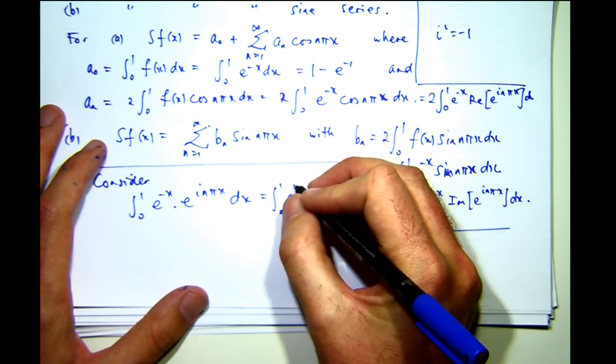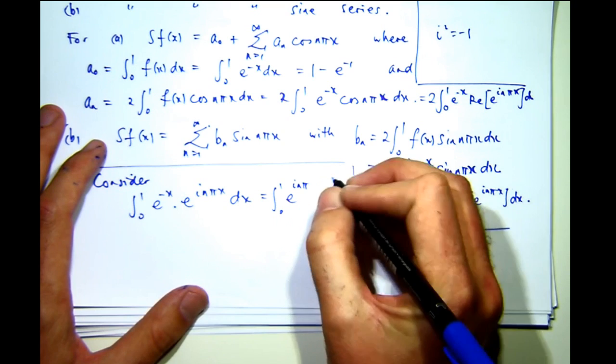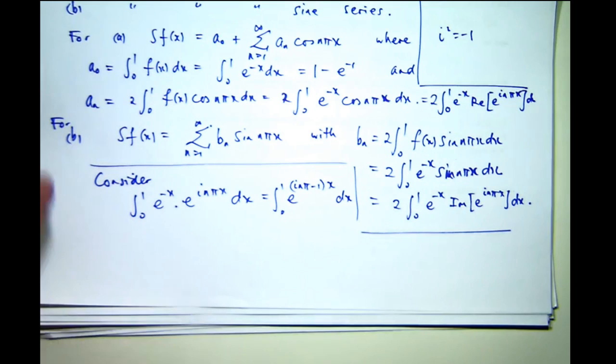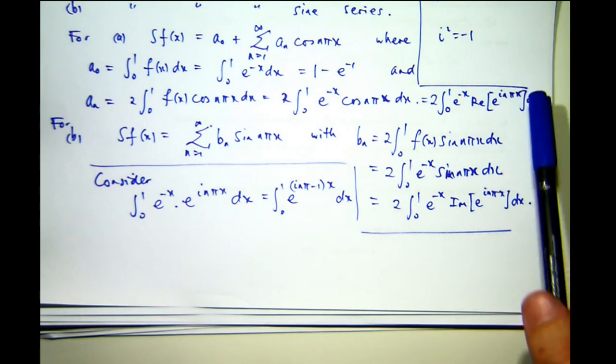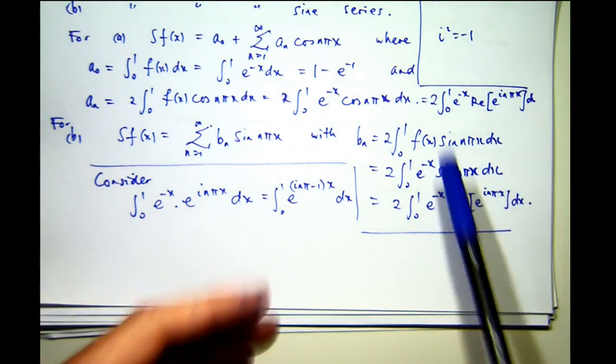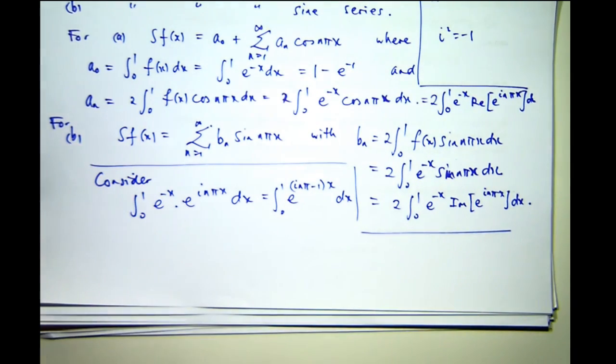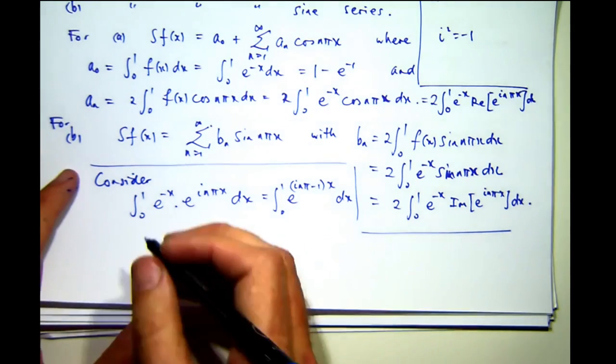What have we got? We've got i n pi minus 1 x. So, just think of i as a constant, and we're just going to do this integral. And then we're going to pick out the real part, pick out the imaginary part, and we can use this here. The real part will come out here. The imaginary part will come out here. So, you've actually got what you want.